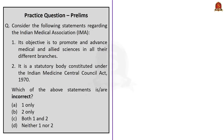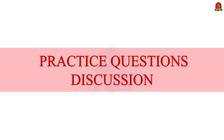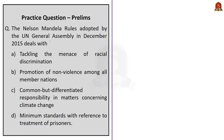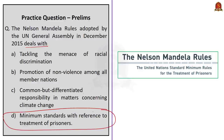Now let us move on to the practice questions discussion session. The first question asks: the Nelson Mandela Rules, adopted by the UN General Assembly in December 2015, deals with — (A) tackling the menace of racial discrimination, (B) promotion of non-violence among all member nations, (C) common but differentiated responsibility in matters concerning climate change, or (D) minimum standards with reference to treatment of prisoners. The correct answer is option D — the United Nations Standard Minimum Rules for the Treatment of Prisoners is known as the Nelson Mandela Rules.